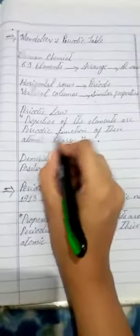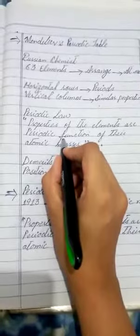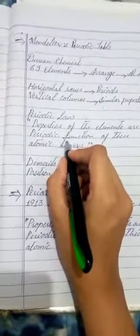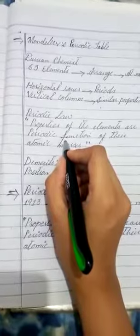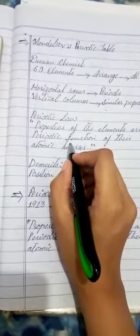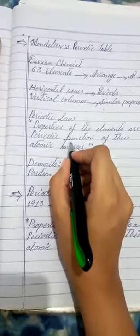Now what is periodic function? Any property, whether it's chemical or physical, of all the periodic table elements, repeats after a fixed number of elements in increasing atomic number, is called periodic function.